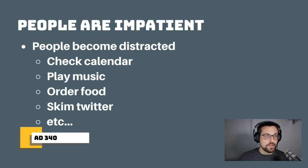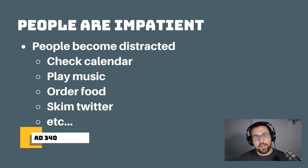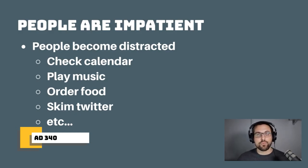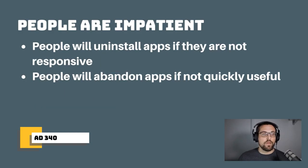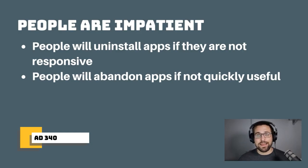Things like checking a calendar, playing music, ordering food, skimming social media — all of these distract us and mean we expect quick, useful functionality. People will uninstall your app if it's slow or unresponsive, and will abandon it if they don't think it's immediately useful. There's also tons of competition from other developers and companies, so we have to provide a great experience to rise to the top. And building software is inherently challenging, regardless of whether it's mobile, machine learning, or backend development.